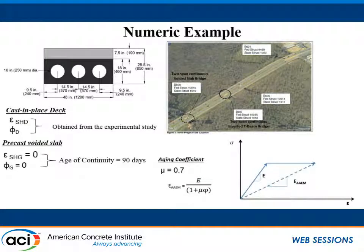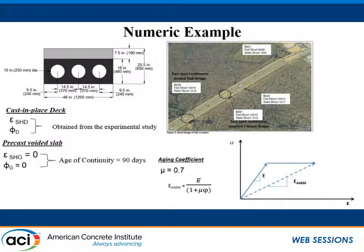To demonstrate the structural effects of differential shrinkage and shrinkage-induced creep, a numeric investigation was carried out using a composite bridge system consisting of adjacent voided slabs and a cast-in-place topping. The cross-sectional properties were taken from a two-span bridge in Richmond, Virginia, constructed last spring. A time-dependent analysis was carried out to quantify the time-dependent stresses in this composite system using the age-adjusted effective modulus method. For the precast voided slab, the ultimate shrinkage strain and creep coefficient were taken equal to zero because the contract document specified an age of continuity equal to 90 days, which is considered long enough to allow the majority of shrinkage and creep to take place.